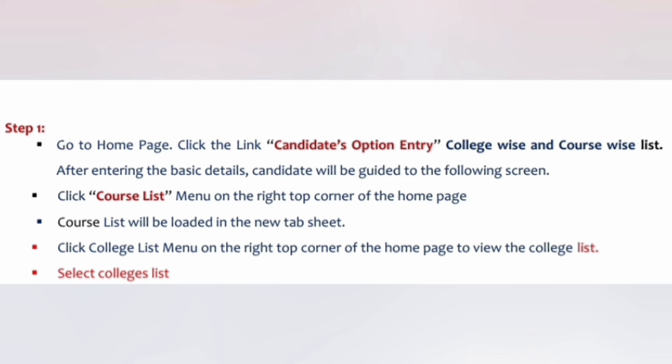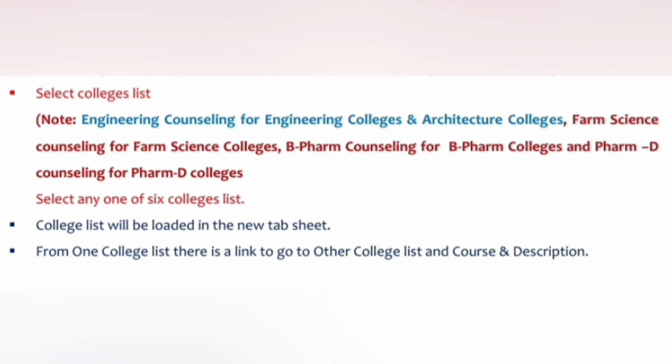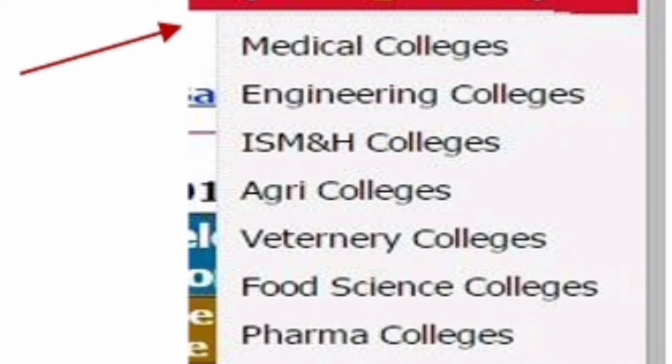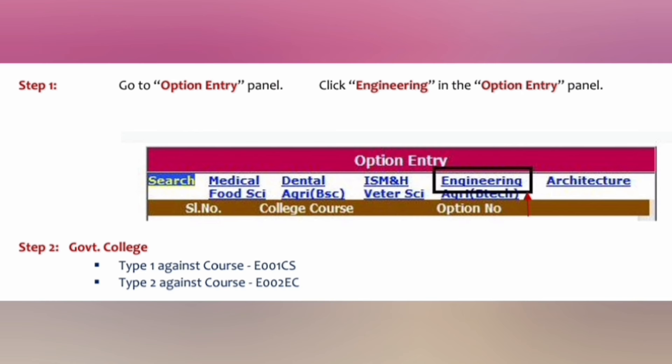Within Candidate Option Entry you will see a college-wise and course-wise list. Note that KCET is not only for engineering — it also covers Farm Sciences, B.Pharma, Pharma D, Architecture, and other courses. Students can select a mix of both engineering and pharma options. So on the top of the screen you will see tabs for Engineering Colleges, ISM, Agriculture, Veterinary, Food Sciences, Pharma colleges, Pharma Lateral Entry, and Pharma D. Select Engineering if you want to enter engineering courses.